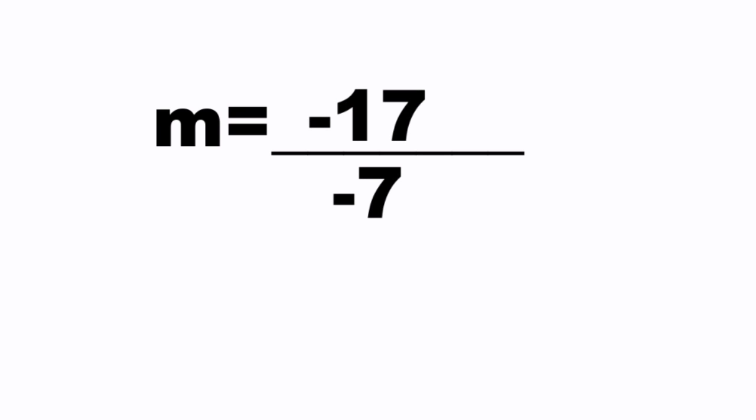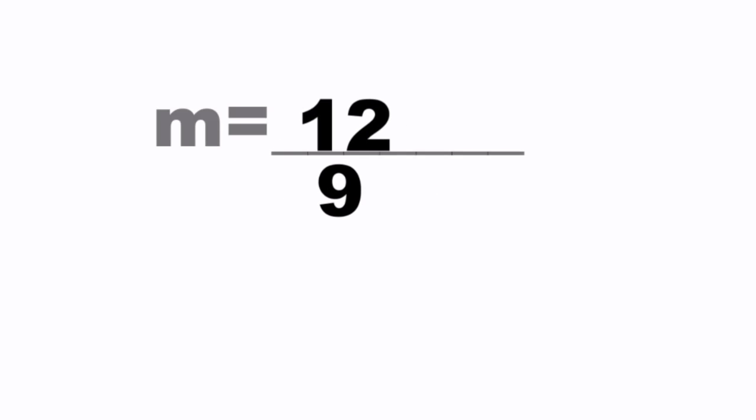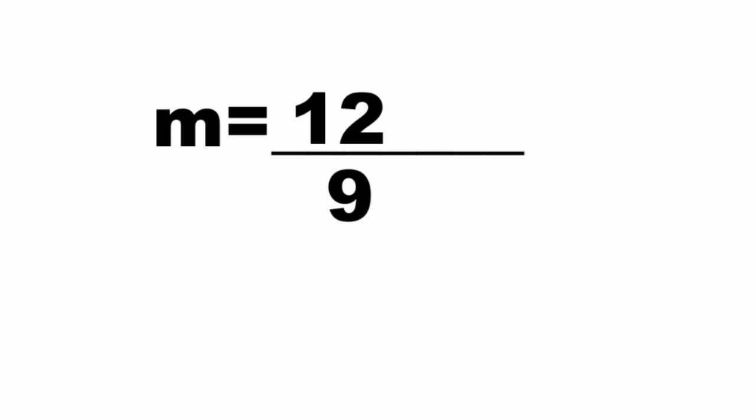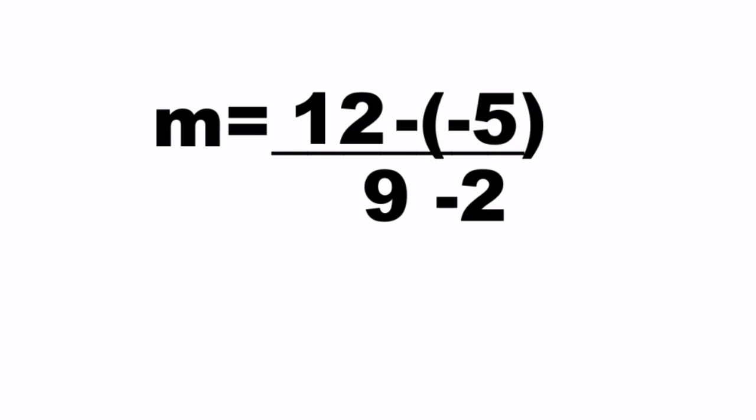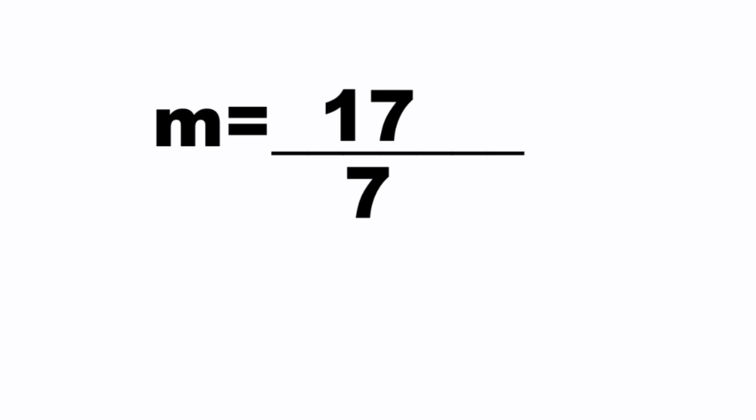You can also interchange the points by using the first pair (9, 12). Write 12 on top and below write 9. Then for point (2, -5), write minus (-5) on top and below write minus 2. So 12 minus (-5) is 17, and 9 minus 2 is 7, giving 17/7.